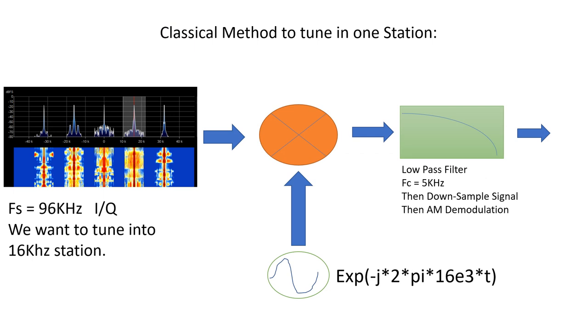Well, first let's take the classical method of how we would tune in to one station. Let's say we want to tune in to the AM radio signal that's at a 16 kilohertz offset from DC. Again, the signal coming in from our SDR has a sample rate of 96 kilohertz, and you see it's picking up five AM signals there. We want to pick up the one that's at 16 kilohertz. Now, in your software-defined radio software, you just click that and it tunes it in, but what's really going on—and this is one classical way of how they did that—essentially we took the whole IQ data, we multiplied it by a negative 16 kilohertz phasor, such that that signal at 16 kilohertz has now been shifted down to DC.